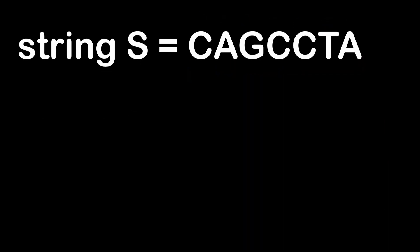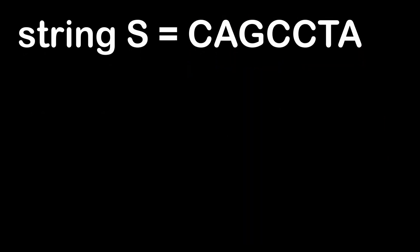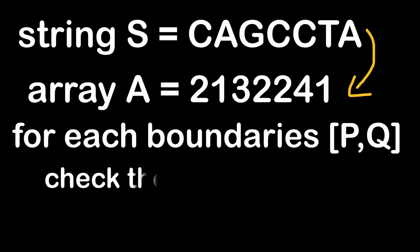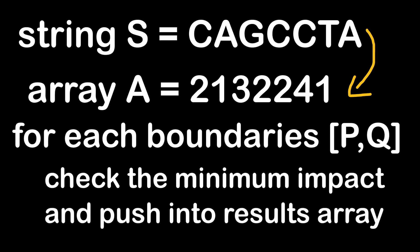We can solve this using a brute approach. The first step would be to replace each letter by its impact factor, then run iterations for each pair of boundaries P and Q, checking within the considered slice for the minimum occurring impact. For each iteration, when we find the minimum, we push it into the results array. However, it's not the most efficient in time complexity, because for each couple of values P and Q, we have to scan the entire string array, leading to high complexity.